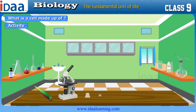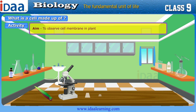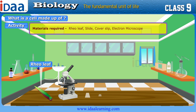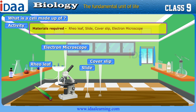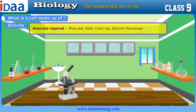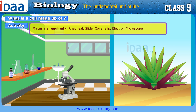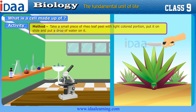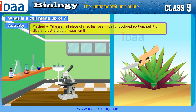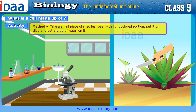Activity: Aim — To observe cell membrane in plants. Materials required: Reo leaf, slide, cover slip, and electron microscope. Method: Take a small piece of Reo leaf peel with the light-colored portion.